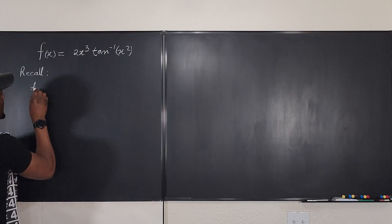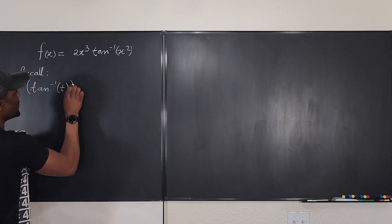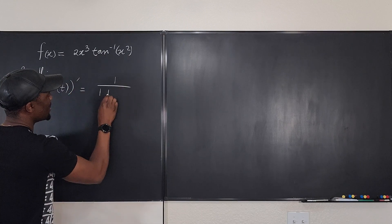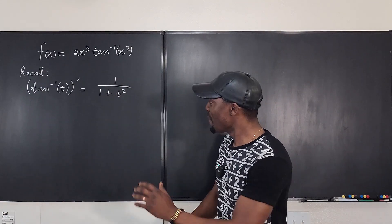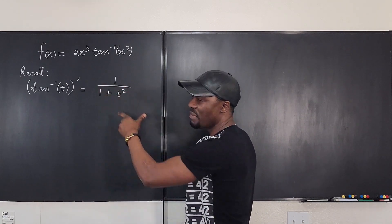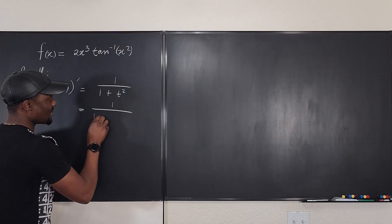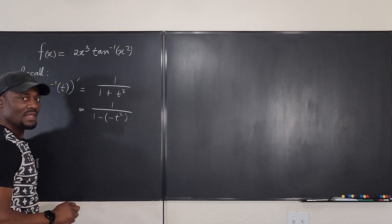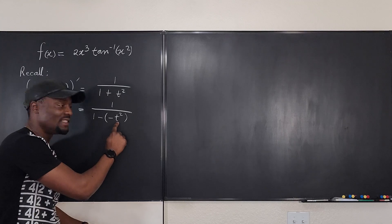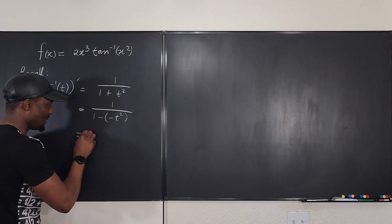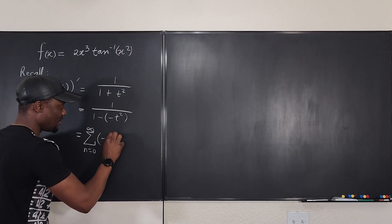Recall that the derivative of arctan(t) is simply 1/(1+t²). With that understanding, we can write this as a power series, because this can be treated as 1/(1−(−t²)). We know from our understanding of power series that if you can write an expression like 1/(1−something), then it equals the sum from n=0 to infinity of that something raised to the power n. So here it equals the sum from n=0 to ∞ of (−t²)ⁿ.